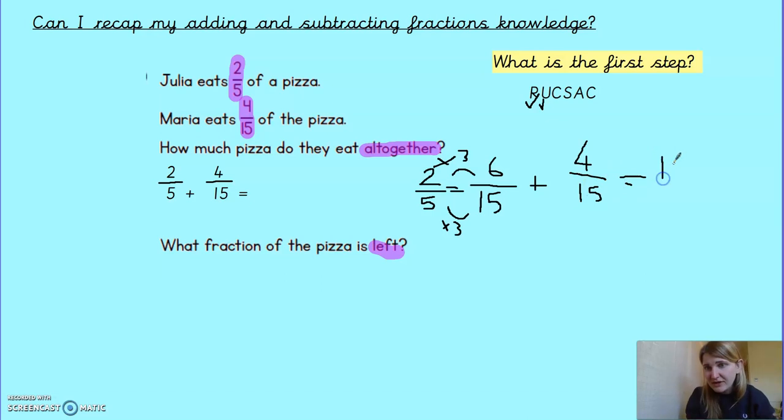Next thing I do would be I'd add them using my new converted denominator. So instead of two fifths, I'm doing six fifteenths add four fifteenths. And that's going to give me ten fifteenths. Okay, now ten fifteenths. Question is, if they're asking how much pizza do they eat all together, I'm going to assume they want it in the most simplified answer. So can I simplify ten fifteenths by dividing it? Is there a times table that has got both ten and fifteen in it? Have a think. Yes, of course there is. They're both in the five times tables. So if I divide both the bottom and the top by five, ten divided by five is two. Fifteen divided by five is three. So Julia and Maria ate two thirds of the pizza all together. That's step one.